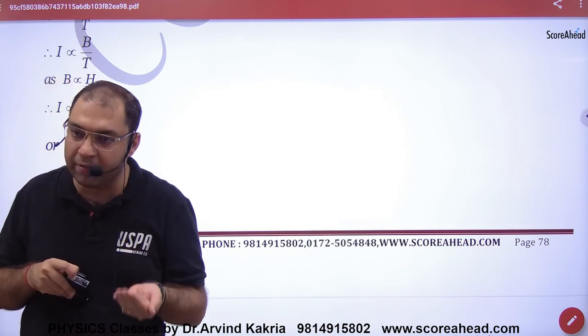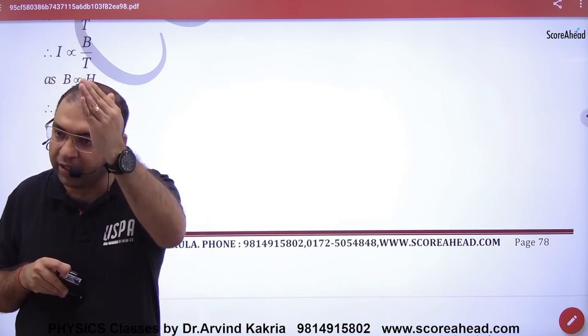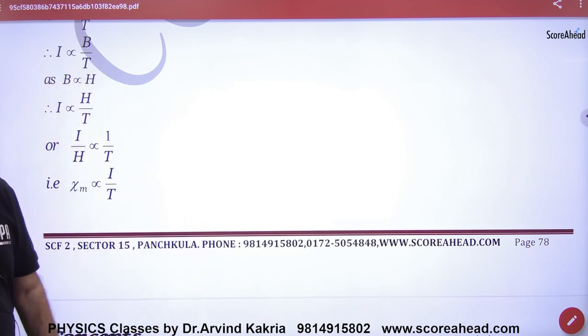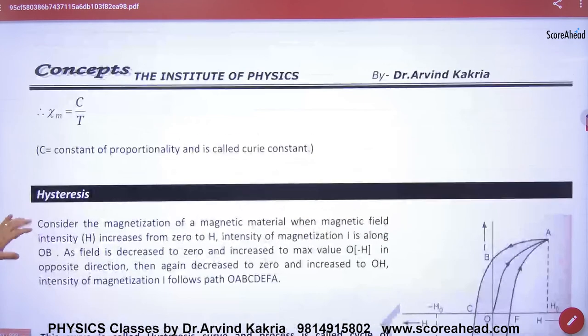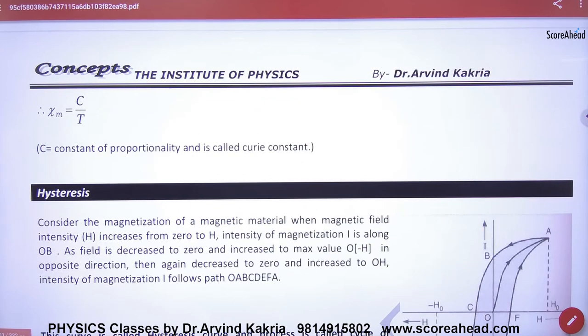And if the temperature is lower, then Chi will be higher, and the substance will be more magnetic. So this is Curie's Law in Magnetism, and C is the constant.